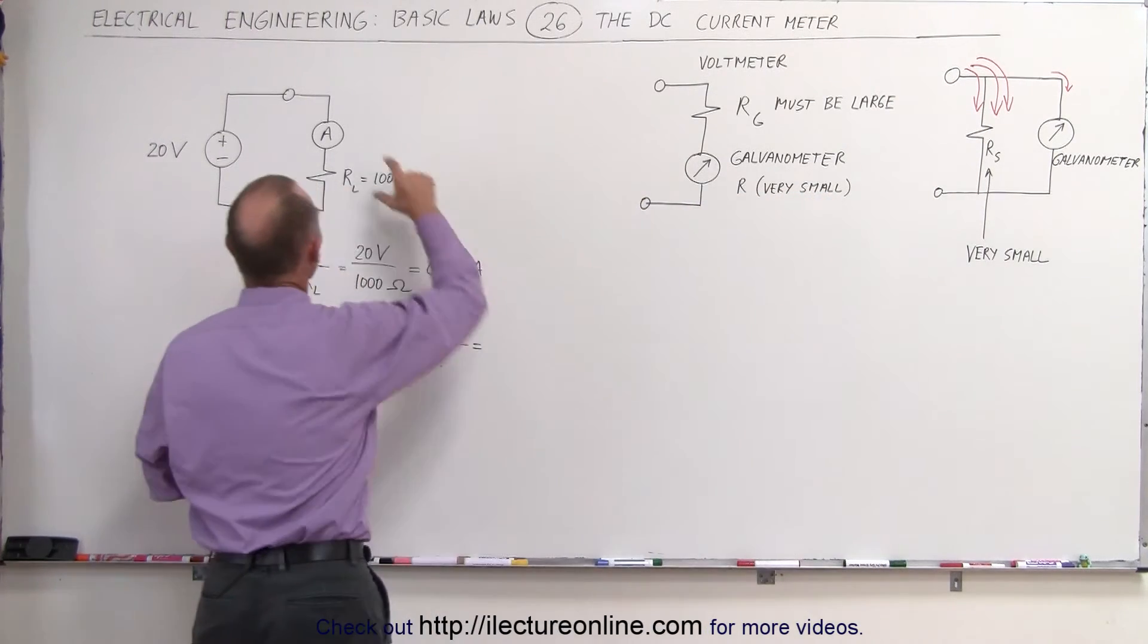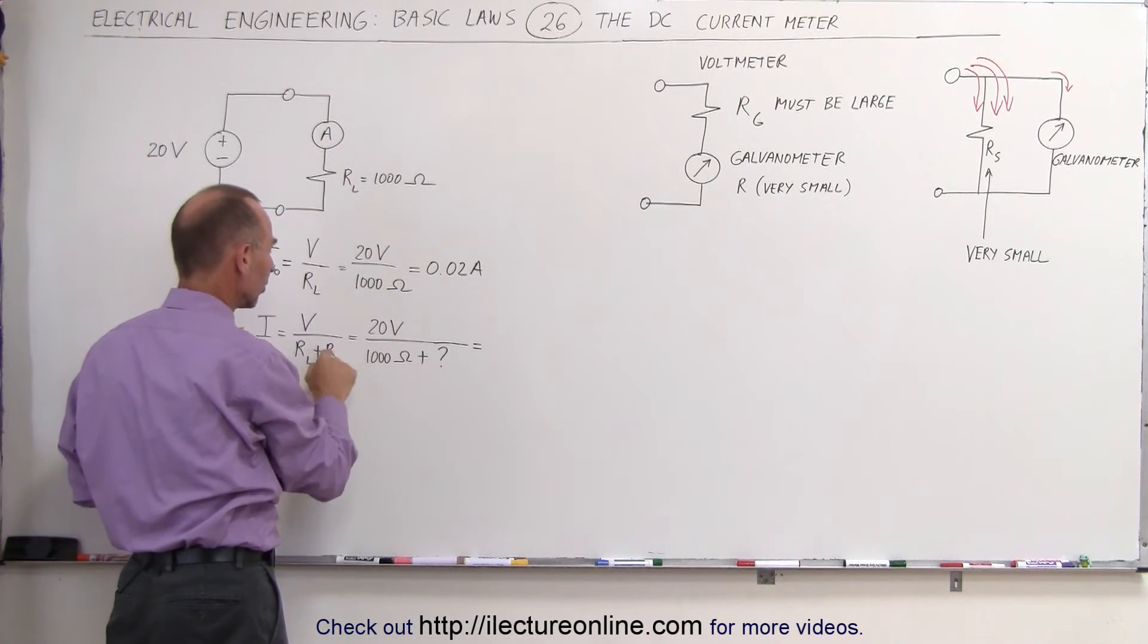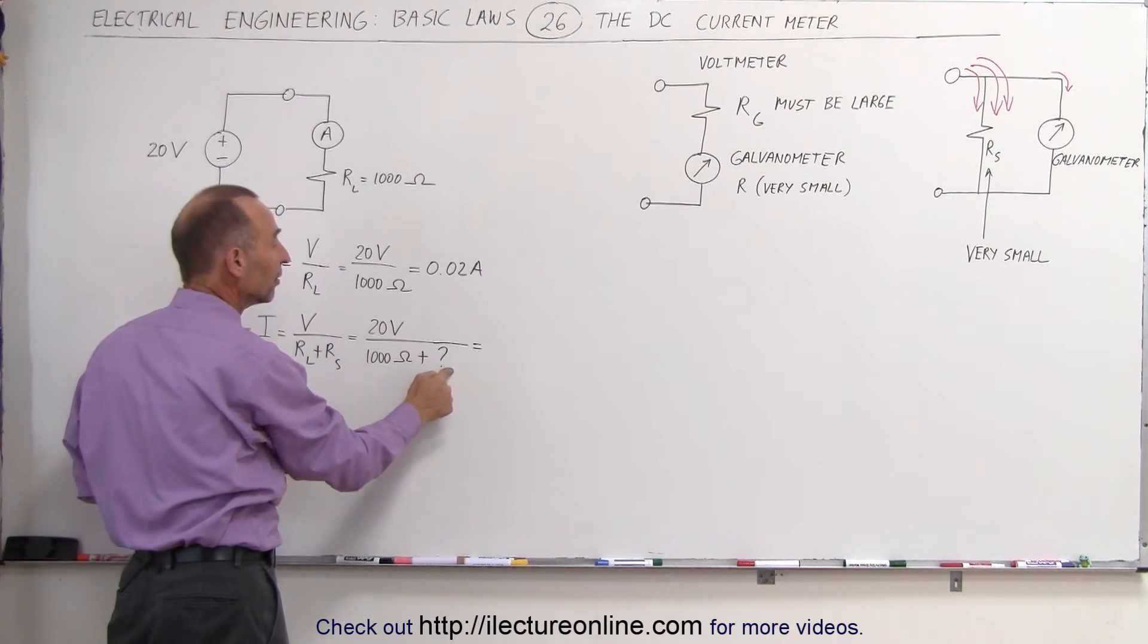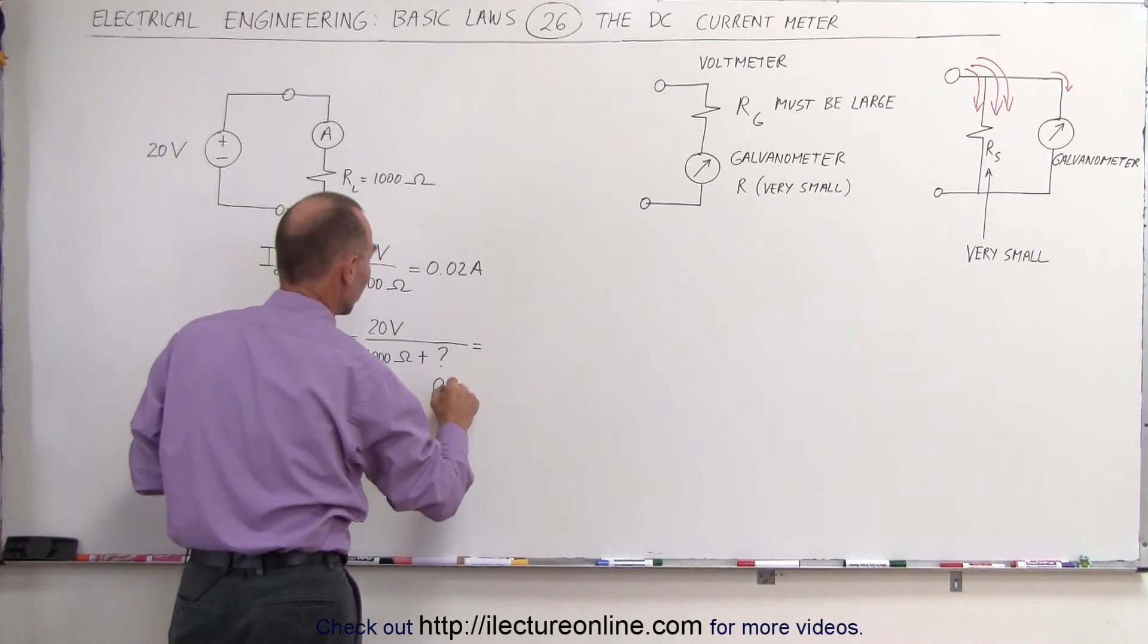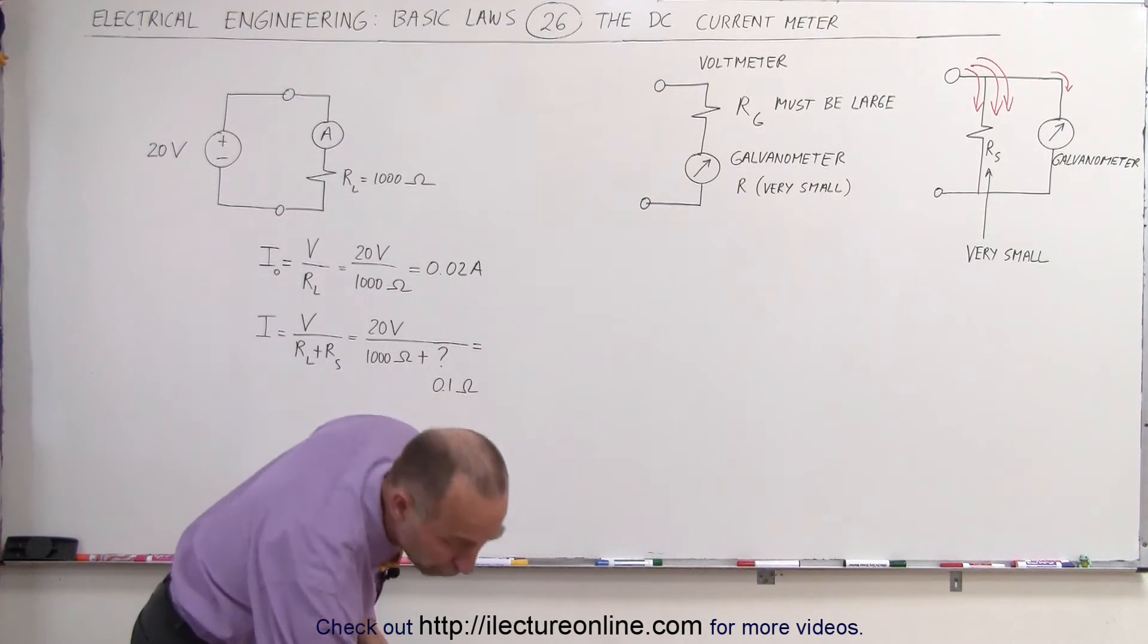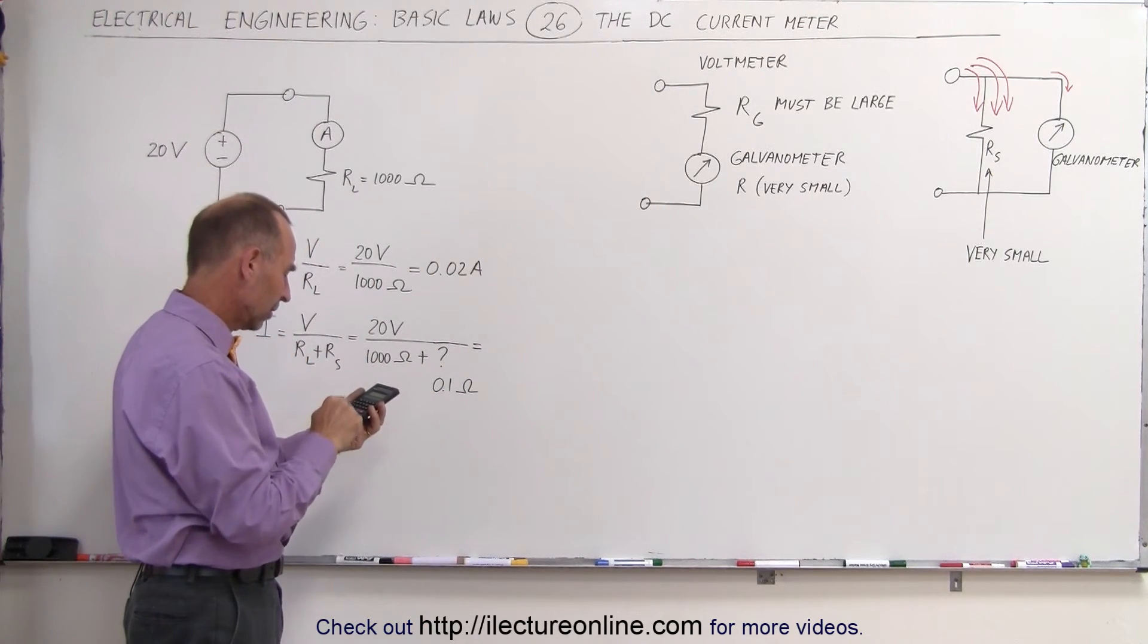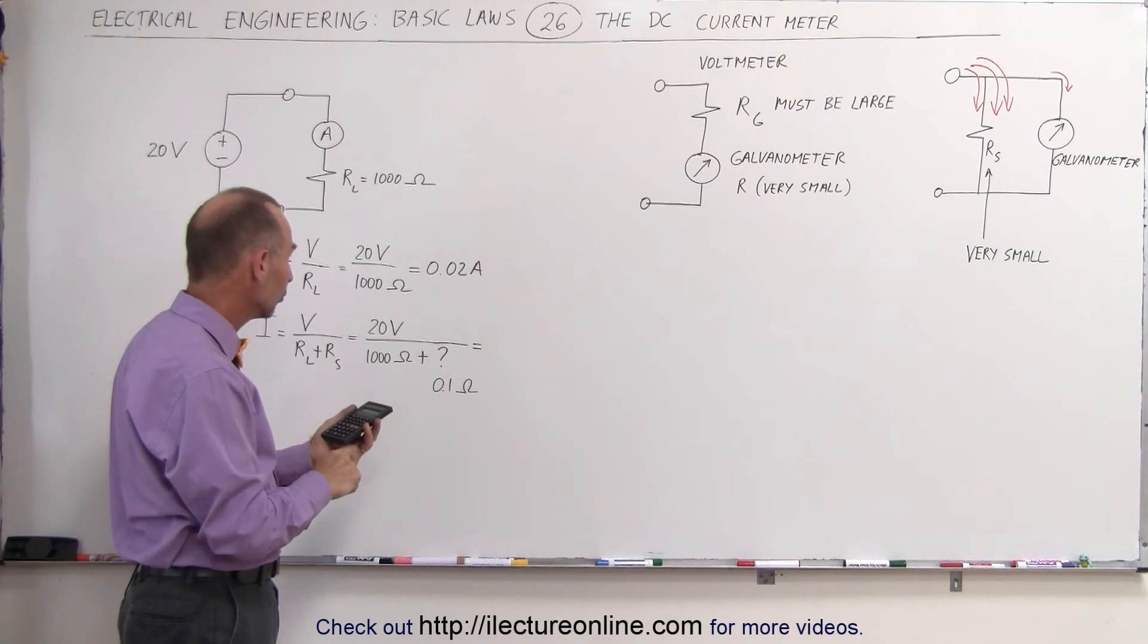If that then is a very small resistor, then when you try to figure out the current of the circuit with the shunt resistor there, if this is just a fraction of an ohm, let's say it's equal to 0.1 ohm, then you can see that the current through the resistor, 20 volts divided by 1000.1, now you can see that the current is equal to...